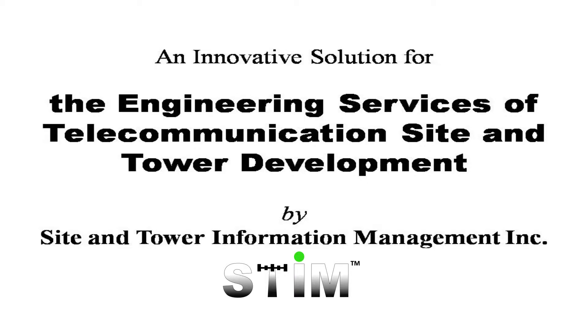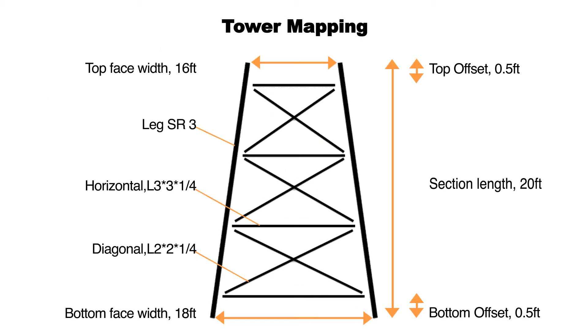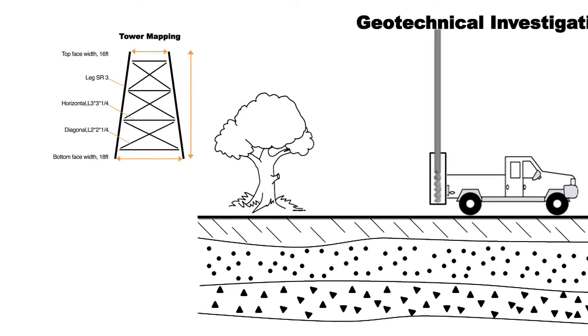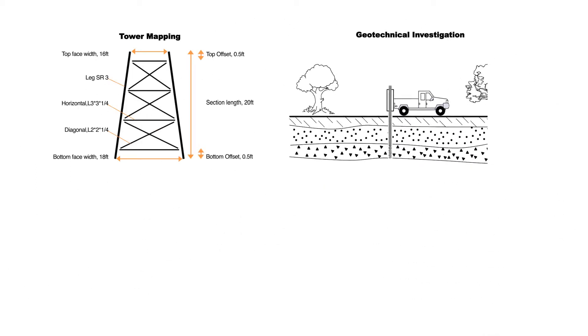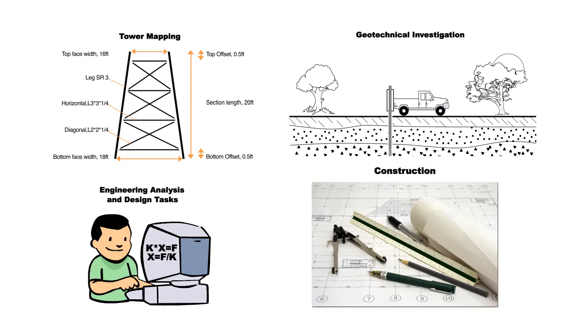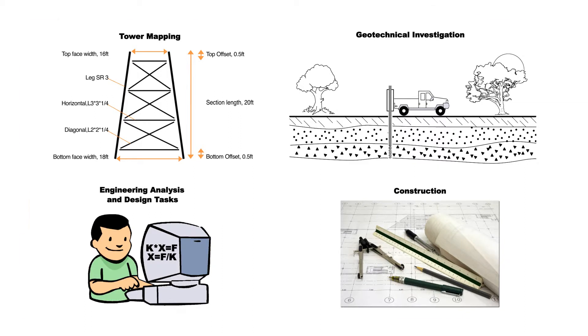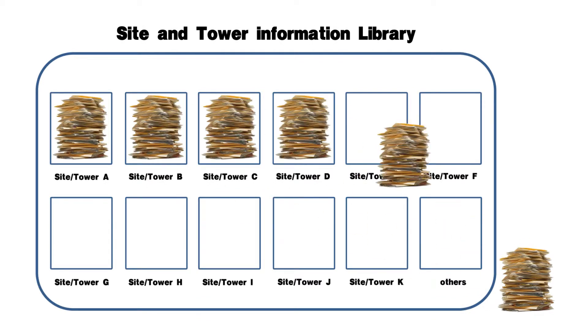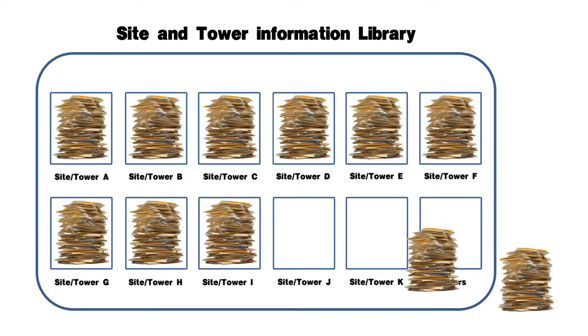Typical civil structural engineering services for telecommunications site and tower development includes tower mapping, geotechnical investigation, engineering analysis and design, and construction. Each type of service generates engineering data and documents for the site and tower. The generated documents are saved to the site and tower information library.